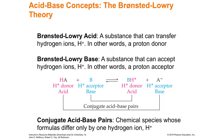Section 16.2, Bronsted-Lowry Acids and Bases. In the 1920s, two guys — they didn't work together, one was in Denmark and the other was in England — independently came up with ideas that broadened Arrhenius' definition of acids and bases.